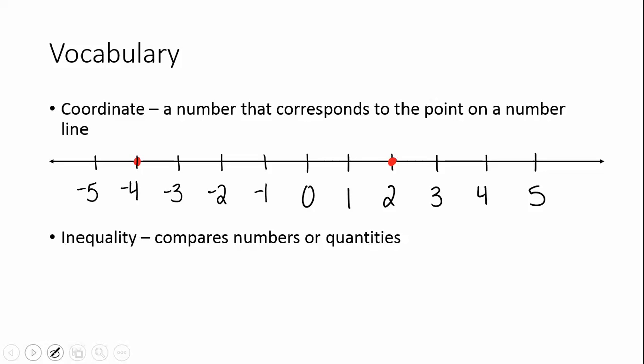Just a few more vocabulary terms. A coordinate is a number that corresponds to a point on a number line. Here we have a coordinate, negative 4. That's the point negative 4 on the number line. We also have a coordinate here at 2, positive 2, on the number line. An inequality compares numbers or quantities.